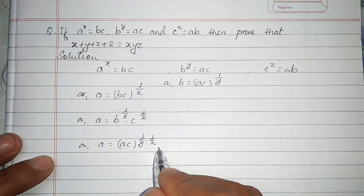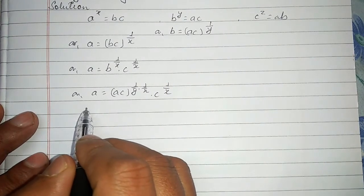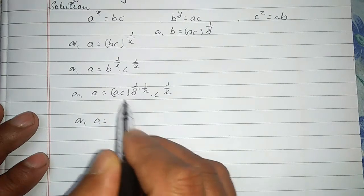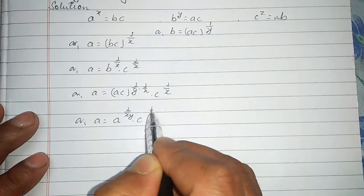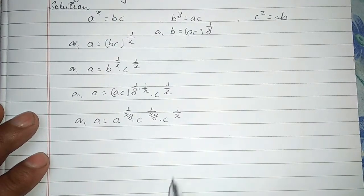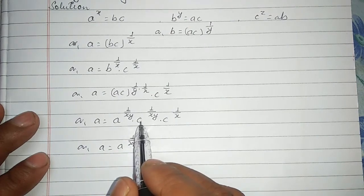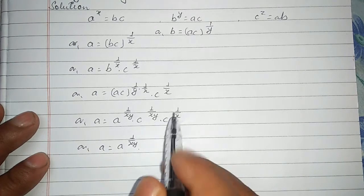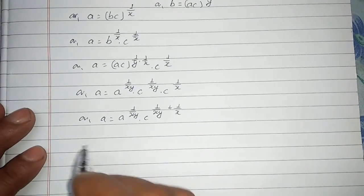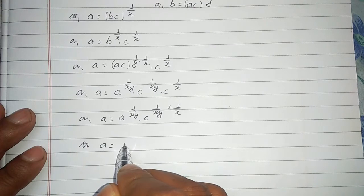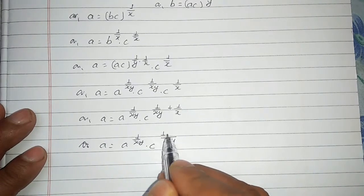The two powers multiply: we get a to the power 1 upon xy and c to the power 1 upon x. So a equals a to the power 1 upon xy dot c to the power 1 upon x. Since the base of a is the same on both sides, we can add the powers: 1 upon xy plus 1 plus y over xy.